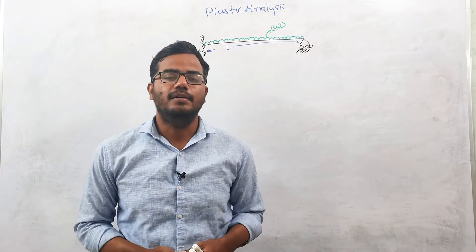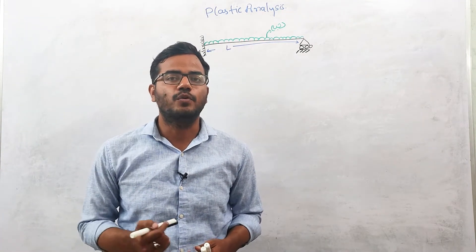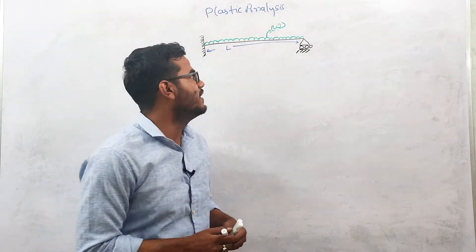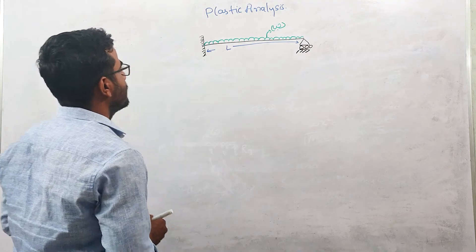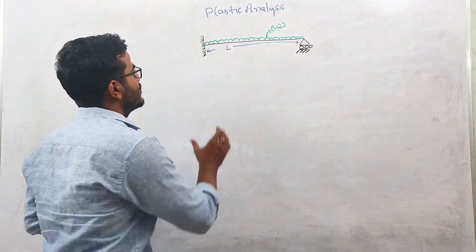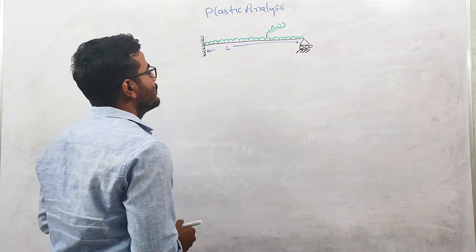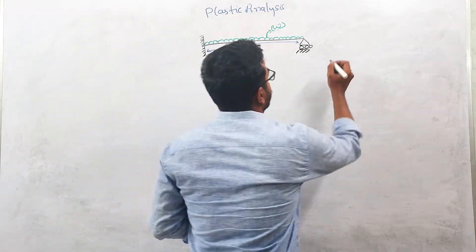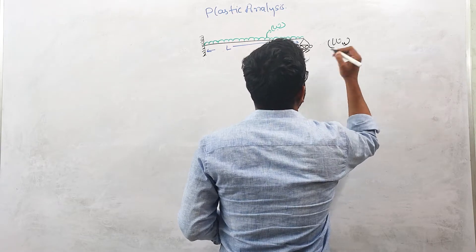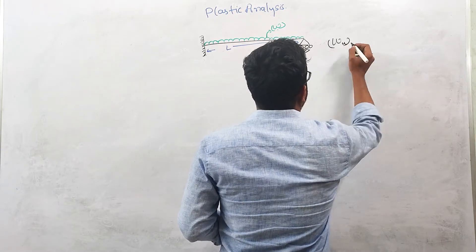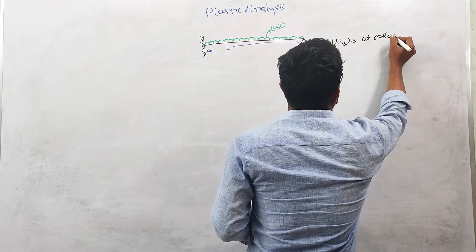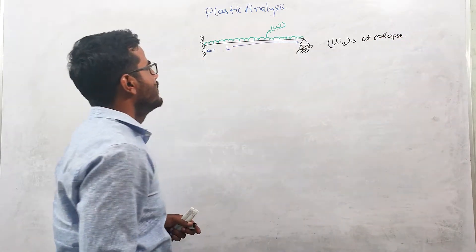Hi guys, welcome back to the channel. In this lecture we are going to discuss one problem on a prop cantilever beam in which we need to calculate the collapse load. This prop cantilever beam has a UDL load acting on it, and we need to find the collapse load — that is, the intensity of UDL at collapse.